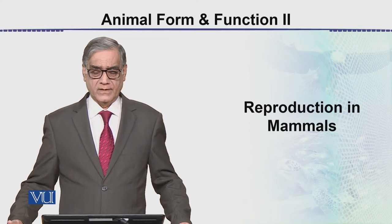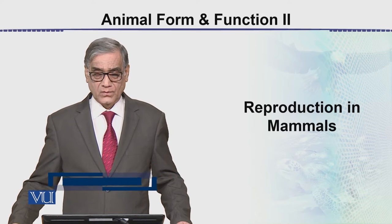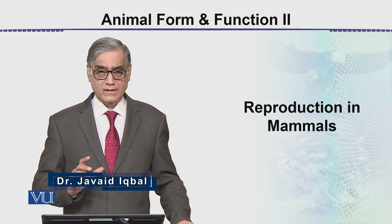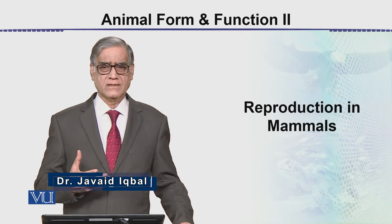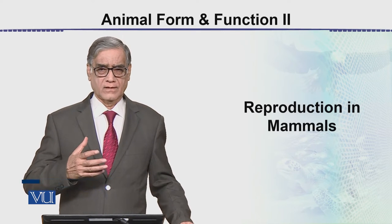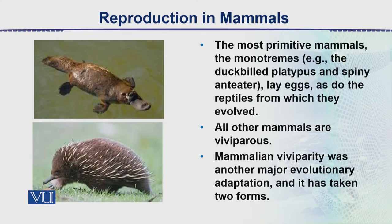The next group is vertebrates — they are the reptiles. We will be discussing reproduction in mammals, and here the human would be an example of a mammal. We will talk about early mammals and then about humans. The most primitive mammals are called monotremes — the duckbill platypus and spiny anteater. These are the most primitive and are egg-laying mammals, sitting between the birds and the mammals.